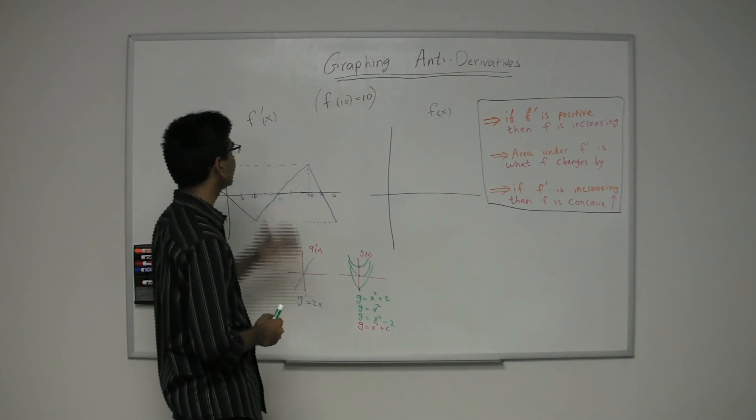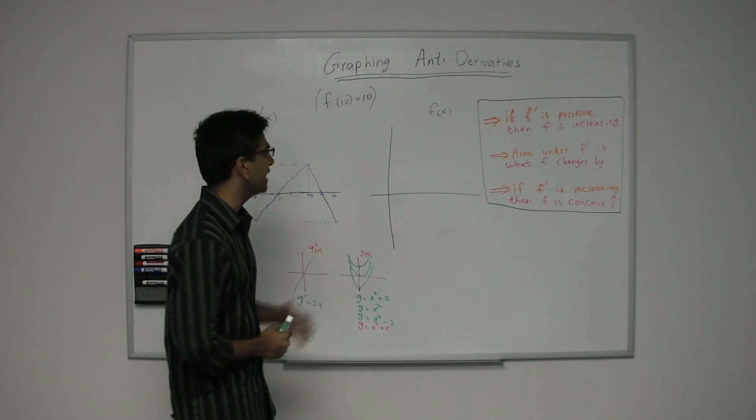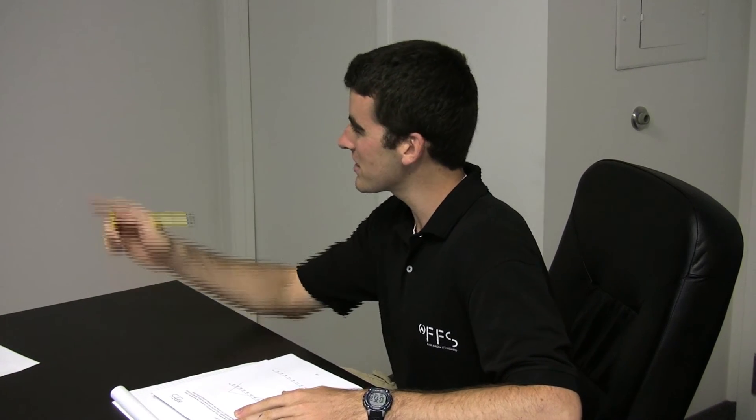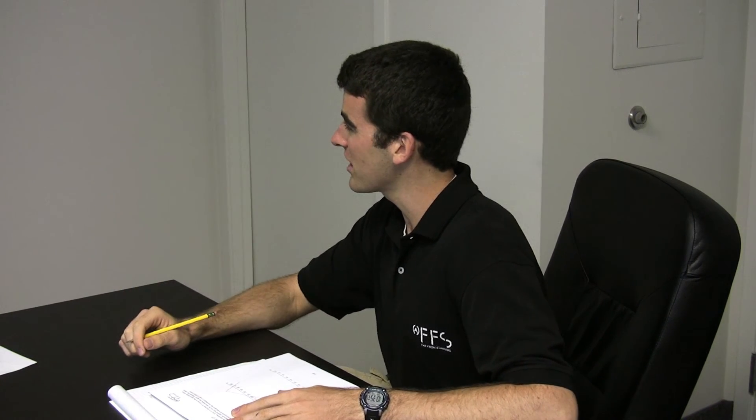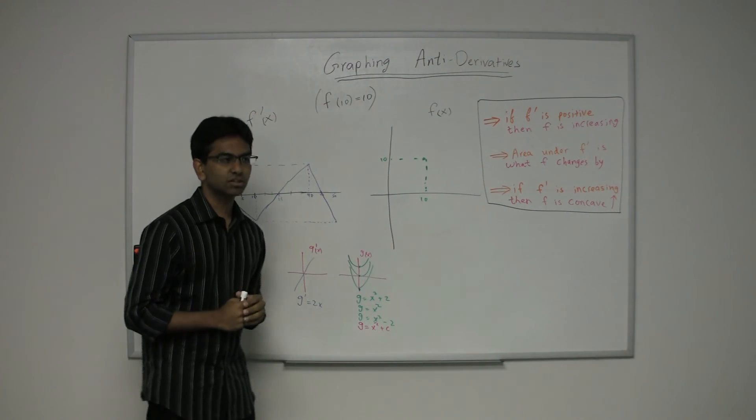So we are given the graph of f prime of x, and we want to graph f of x. But wait, isn't f of 10 equal to 10? Why is on the graph f of 10 equal to negative 4? That's a good question, John.